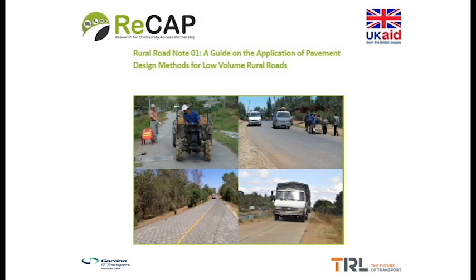What is the Rural Road Note — is it a book, a guideline, or a manual? In the area of civil engineering, there are three main kinds of documents that are used. The first are manuals, the second includes guidelines, and the third are specifications. Manuals contain a set of well-laid-out instructions to follow. They generally don't give a lot of explanation about the context surrounding those instructions.